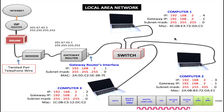First I want to talk about IP addresses that are assigned to this local area network. For computer number one, the IP address is 192.168.2.4 and it has a gateway IP of 192.168.2.1. The gateway is this router's gateway, and the purpose of this gateway is if you want to get onto the internet, the computer has to know where to go. So this IP address points to that gateway for internet access.